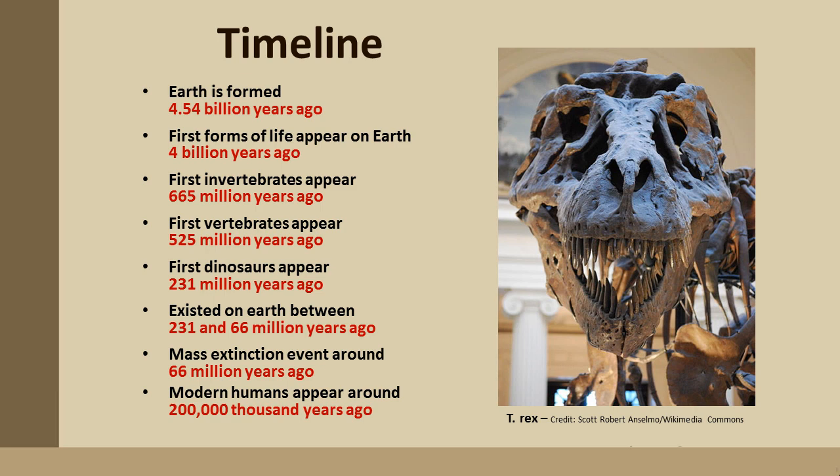Around 300 million years later, we finally get to dinosaurs, after vertebrates have evolved quite a bit, which we'll cover in the next several videos. Around 231 million years ago, the first dinosaurs appear, and they existed between 231 and 66 million years ago. Around 66 million years ago, most of the dinosaurs went extinct — something terrible happened and there was a mass extinction. The only dinosaurs that would make it out of this event were birds. Then 200,000 years ago, the first modern humans appear, which is just a recent event when you look at the extreme periods of time involved with life on Earth.